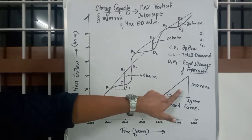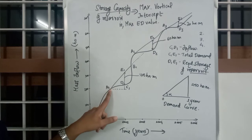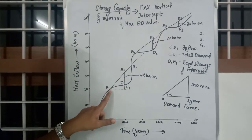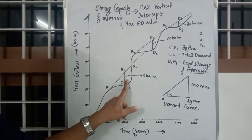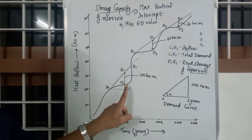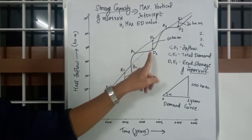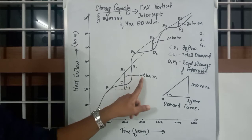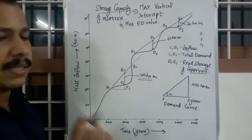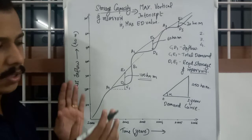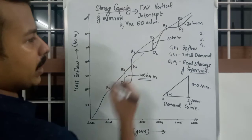To summarize: the first step was to gather the demand curve and mass inflow curve. The second step was to draw tangents parallel to the demand curve at all the high points a1, a2, a3. The final step: the storage capacity equals the maximum of those vertical intercepts. Comparing all three, the maximum vertical intercept was e1d1 = 75 hectare meters, so we construct the reservoir with a capacity of 75 hectare meters.